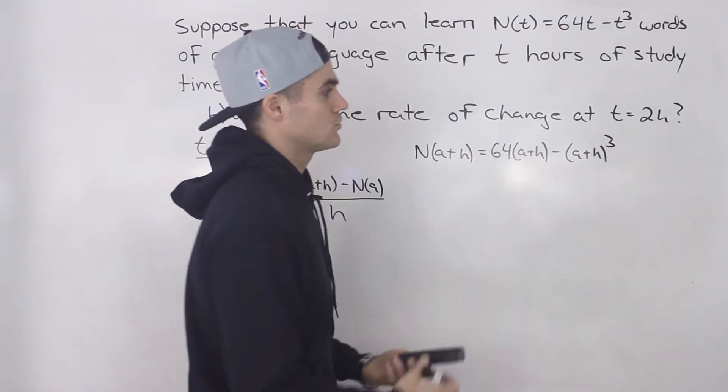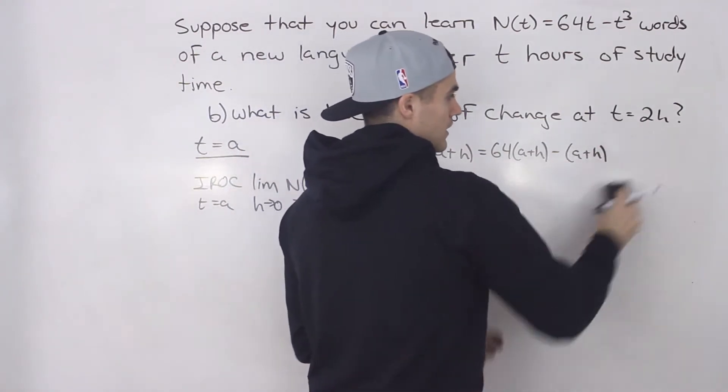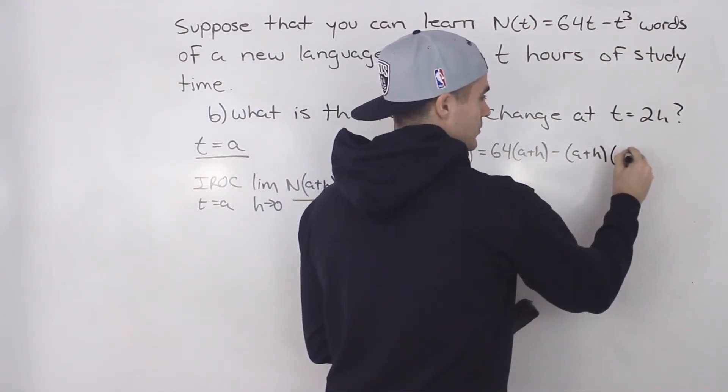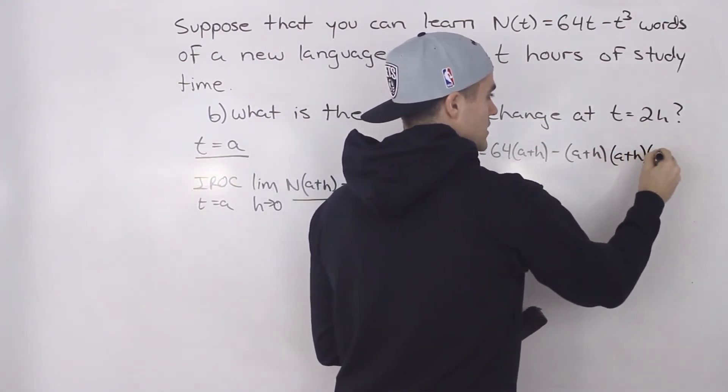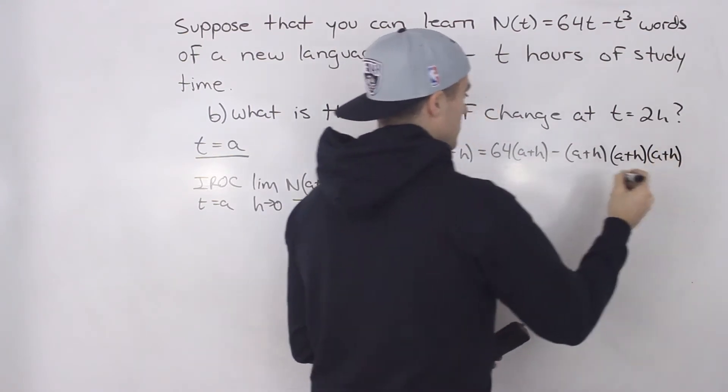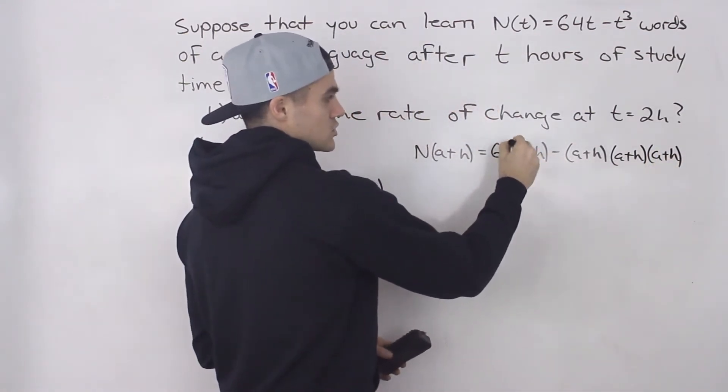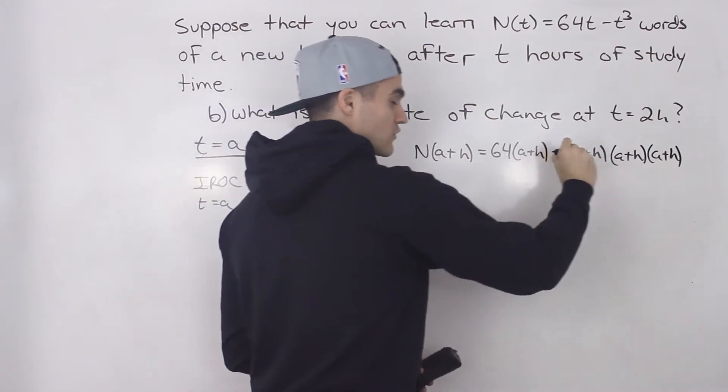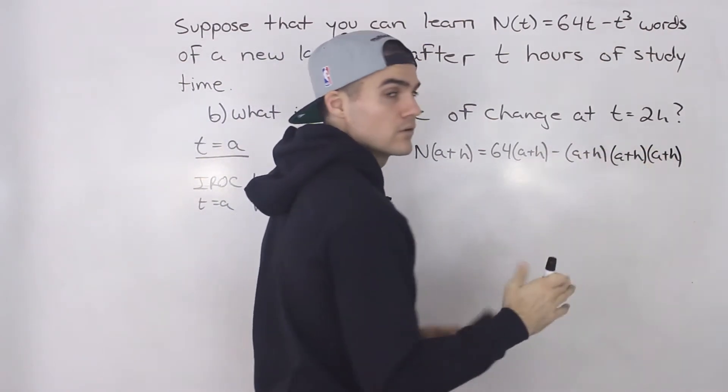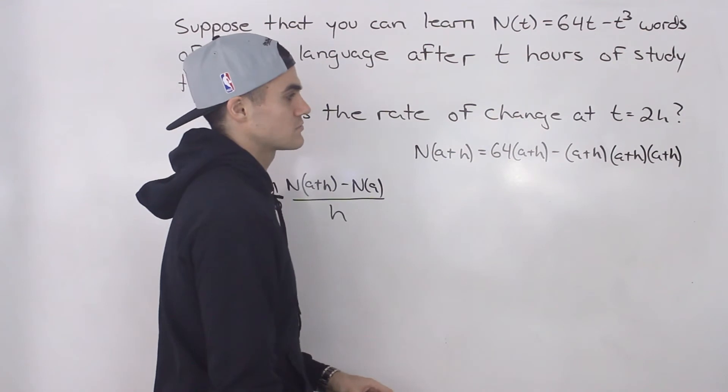And this (a+h) cubed, we can rewrite as three brackets: (a+h) times (a+h) times (a+h). So we're going to have to distribute the 64 in this bracket, we're going to have to foil all of that out, and then we're going to have to simplify with like terms.